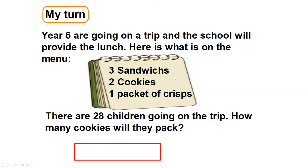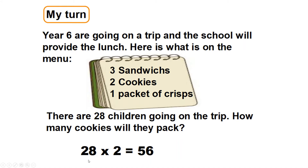These ones are quite easy. Year six are going on a trip and the school will provide lunch. Here is the menu: three sandwiches, two cookies, and a packet of crisps. There are 28 children going on the trip — how many cookies will they pack? There are 28 children and they get two cookies each. It's a really simple sum: 28 times two equals 56.